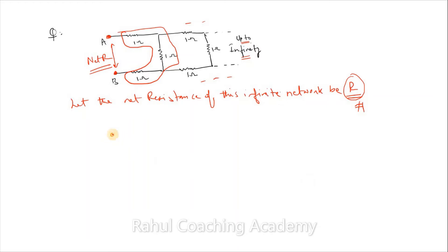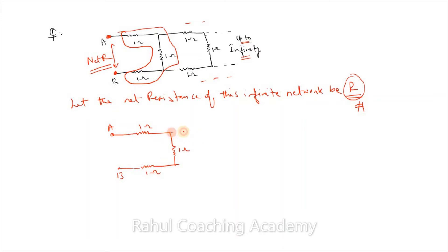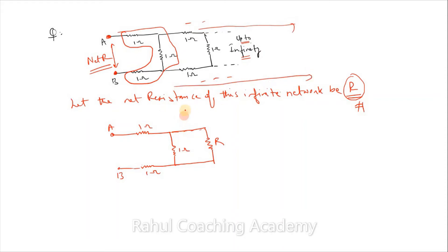So we can redraw the circuit. We add this network of 1 ohm with point B here, and then attach the remaining infinite network solved to resistance R. The entire network from here till here has been solved and gives the answer R.